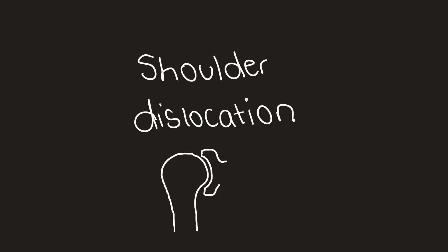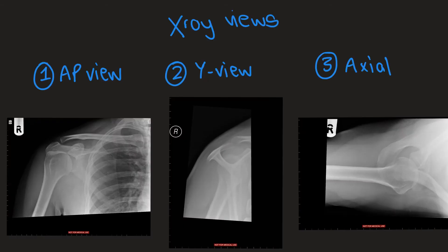In this video we're going to be discussing the common types of shoulder dislocation. Typically AP views and Y views are performed as standard in most centers. Axial views are also sometimes performed.